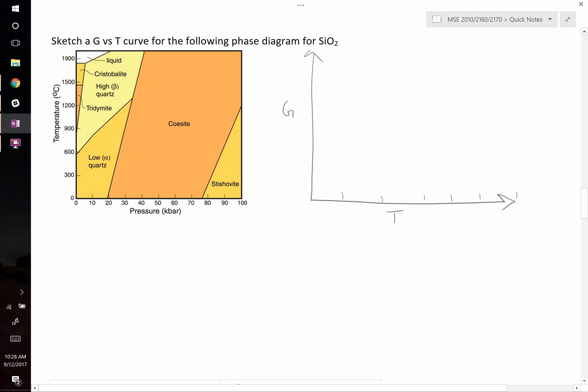We know at the lowest temperatures, we're going to have low quartz, all the way up to about 600. So somewhere around here, all of this region, we should have low quartz. And then all the way up to about 900, we should have high quartz, which they're calling beta.